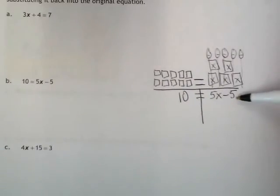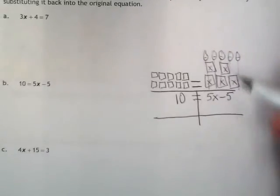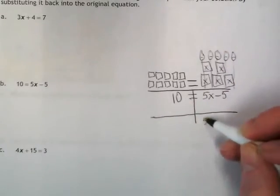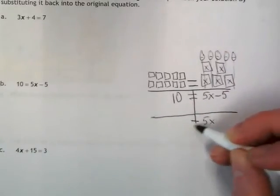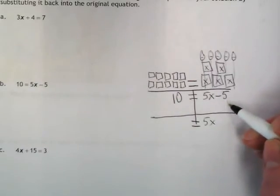Over here, I have a negative 5, and I need to get a 0 here. So I'm going to have to do something where the 5x stays and the equal sign is still there, and this negative 5 becomes a 0.